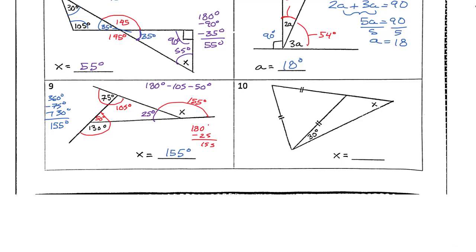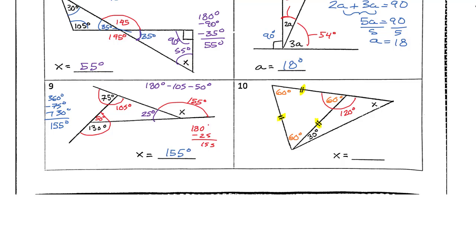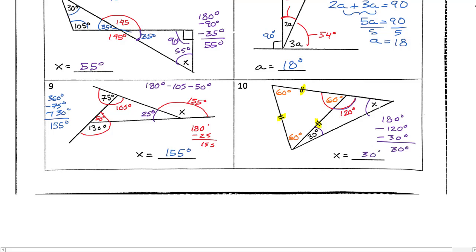The last one stumps people on quizzes and tests. We have an equilateral triangle — the hash marks mean all sides are equal — so all angles are 60 degrees. Apply the supplementary angle rule: 180 minus 60 is 120 degrees. Then inside the final triangle with one, two, three corners, take 180 minus 120 minus 30, which gives 30 degrees for x. Remember, it's not drawn accurately — trust your math. That's the end of this lesson. Give the homework a try, and thanks!